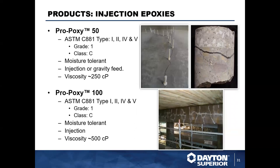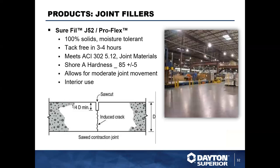Pro Poxy 50 meets ASTM C881 Grade 1, Type C, Class C — a moisture-tolerant injection and gravity-feed product great for repairing cracked concrete walls and structures by installing ports and injecting epoxy from the bottom port upward. Pro Poxy 100 is a moisture-tolerant injection epoxy better suited for structural connections or repairs requiring an injection material.